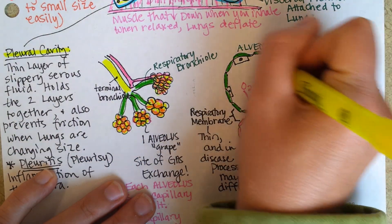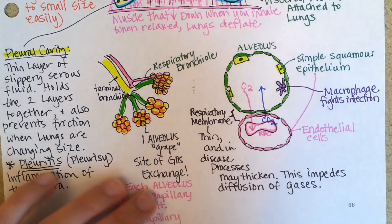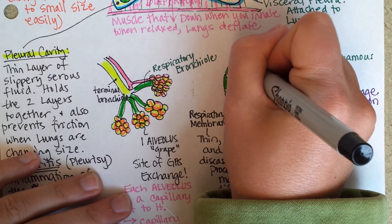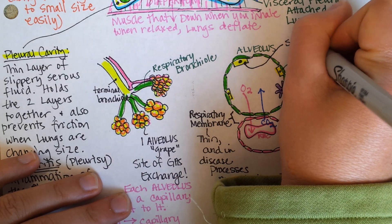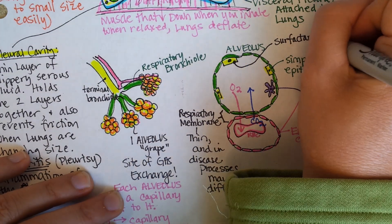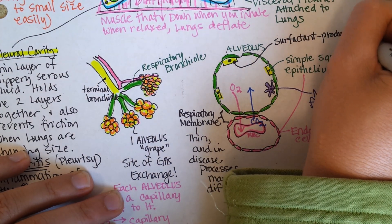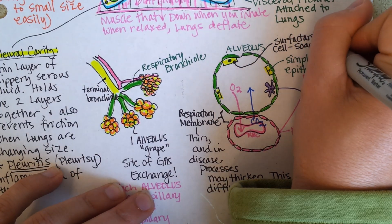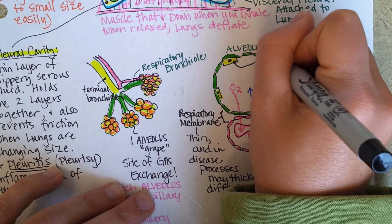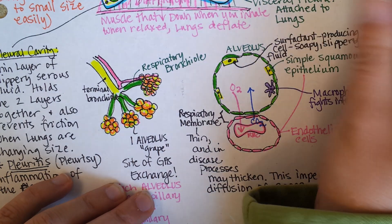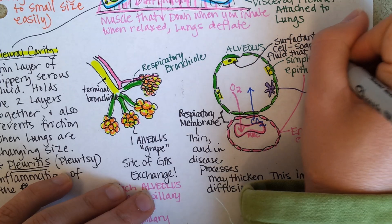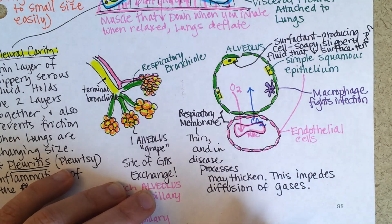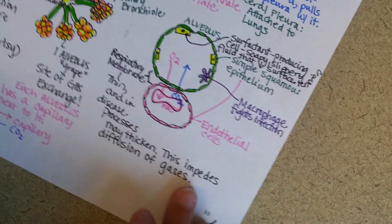The alveolus also has one other kind of cell — this is called a surfactant-producing cell. Surfactant is a soapy, slippery fluid that decreases surface tension.